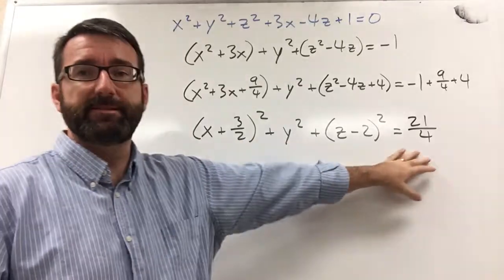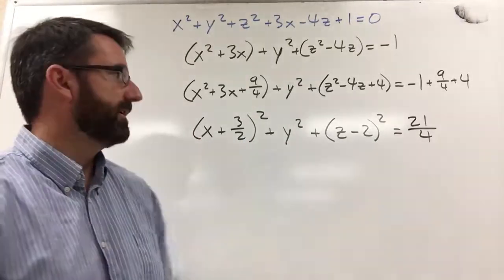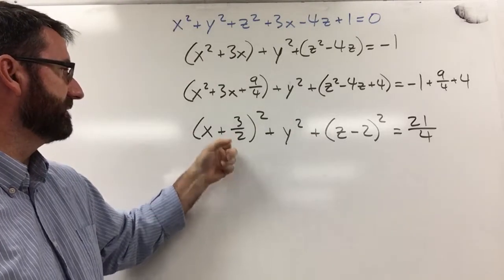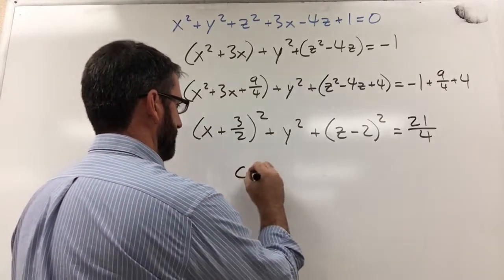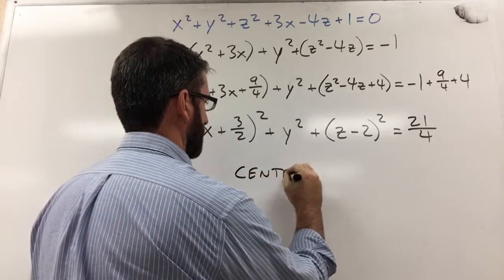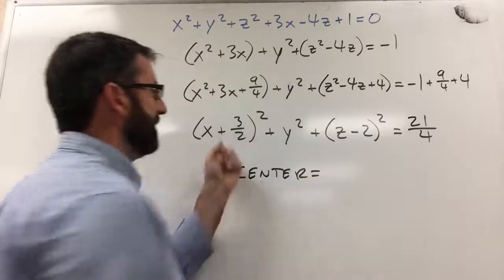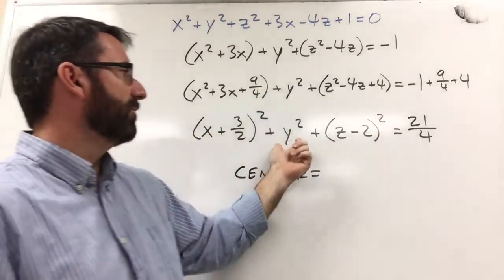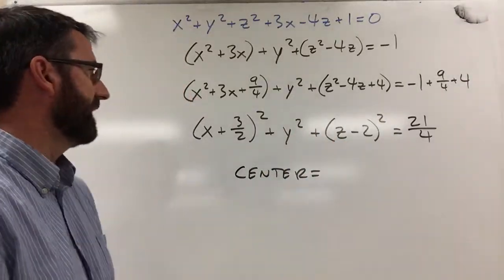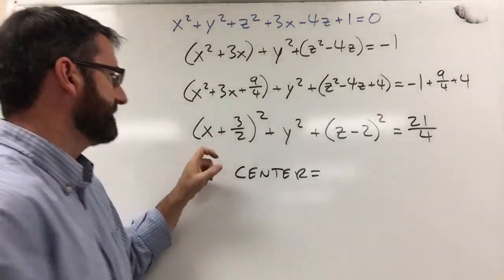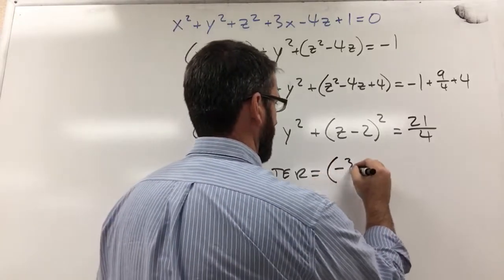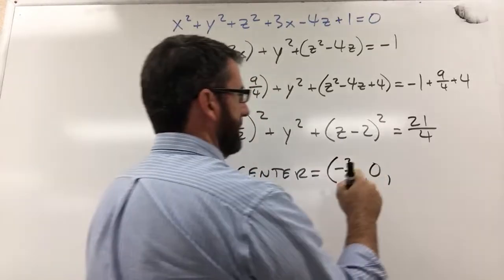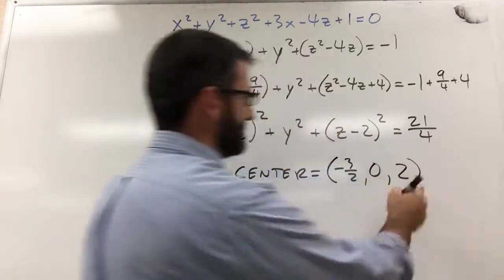Now we've got this in standard form and we can just read off the center and the radius. The center is going to be negative 3 halves. Because remember with our standard form, it was x minus x naught, y minus y naught, z minus z naught. So this is going to be negative 3 halves and then 0 for our y term. And then the z term is going to be positive 2. That's our center.